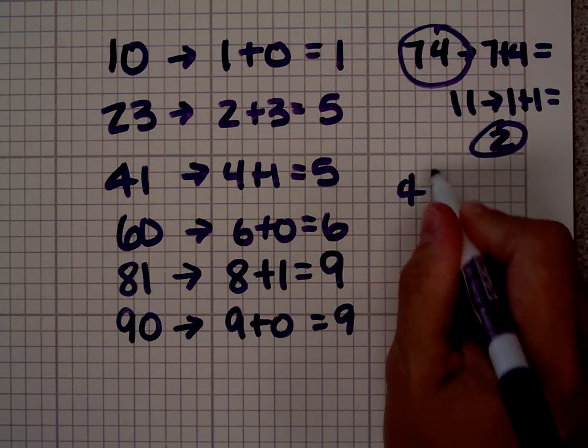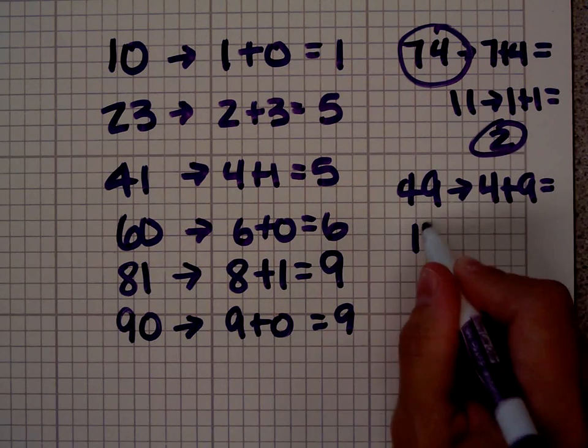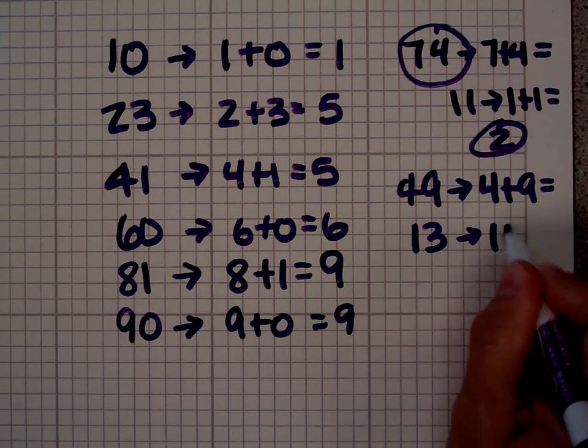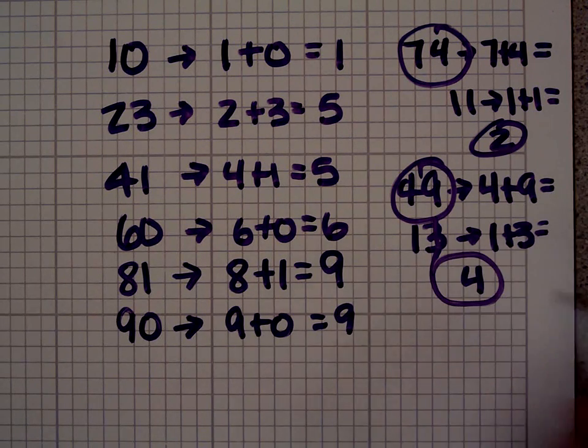Let's look at 49. We add 4 plus 9 and we get 13. We add 1 plus 3 and we get 4. So the digital root of 49 is 4.